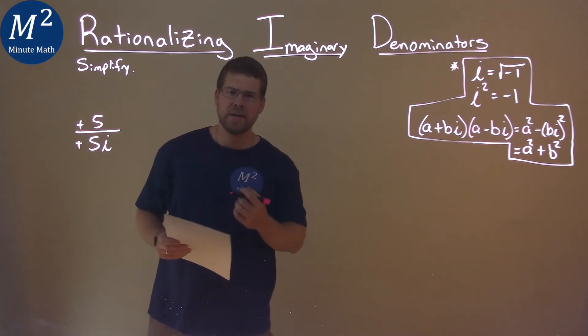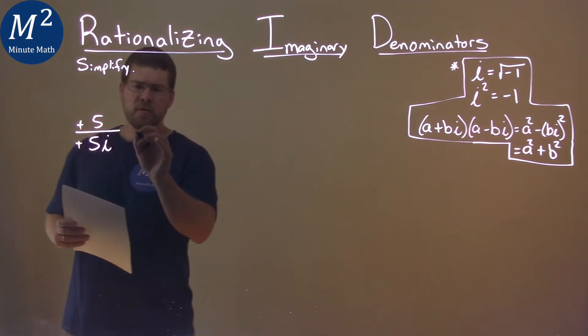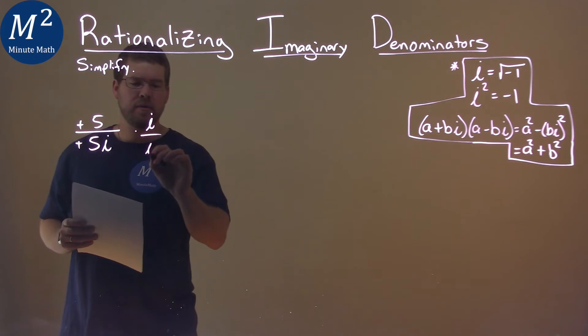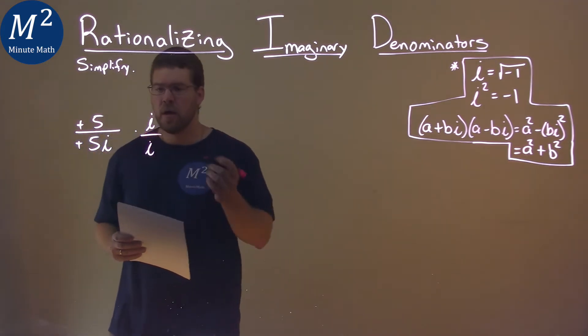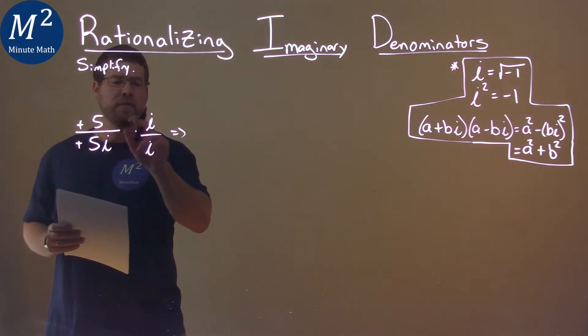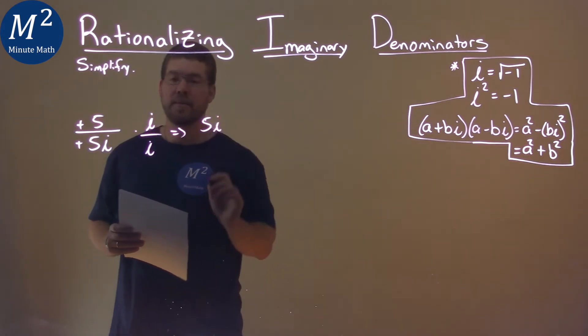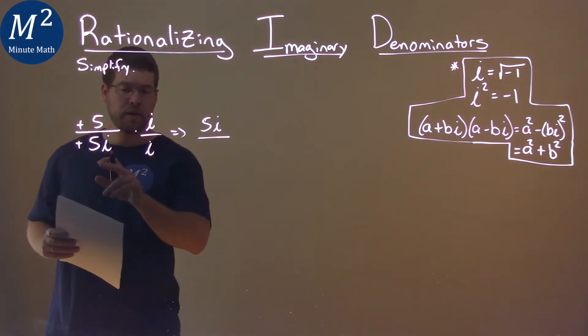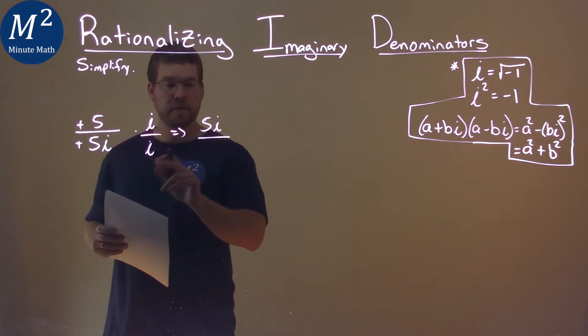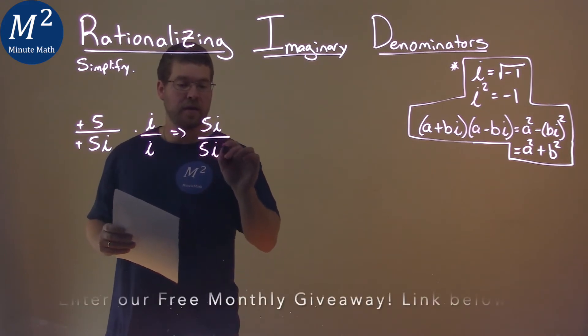But I still have an i in my denominator. So I'm going to take this and multiply it by i over i. Multiply across the numerator. 5 times i is 5i, and then across the denominator 5i times i is 5i squared.